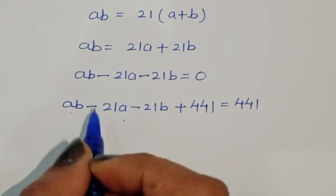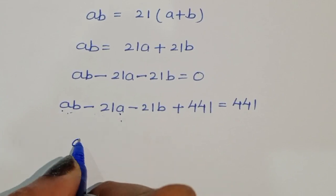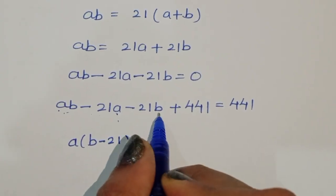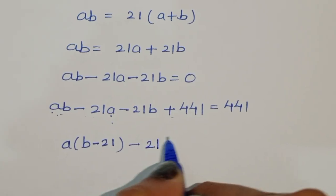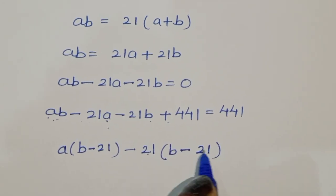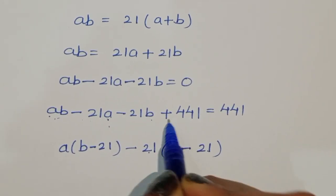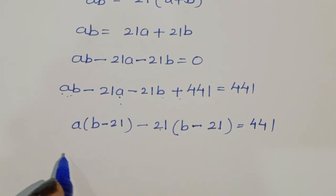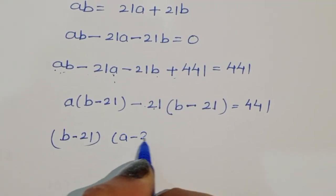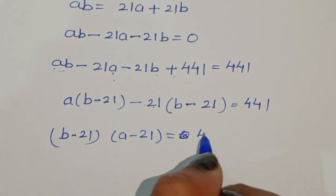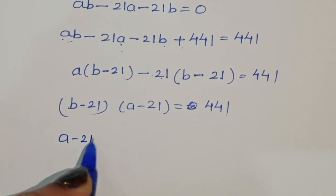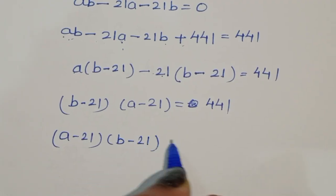Now we have ab minus 21a minus 21b plus 441 equals 441. Taking common factor a from the first two terms gives a times (b minus 21), and taking minus 21 common from the remaining terms gives minus 21 times (b minus 21). So we get (a minus 21)(b minus 21) equals 441.